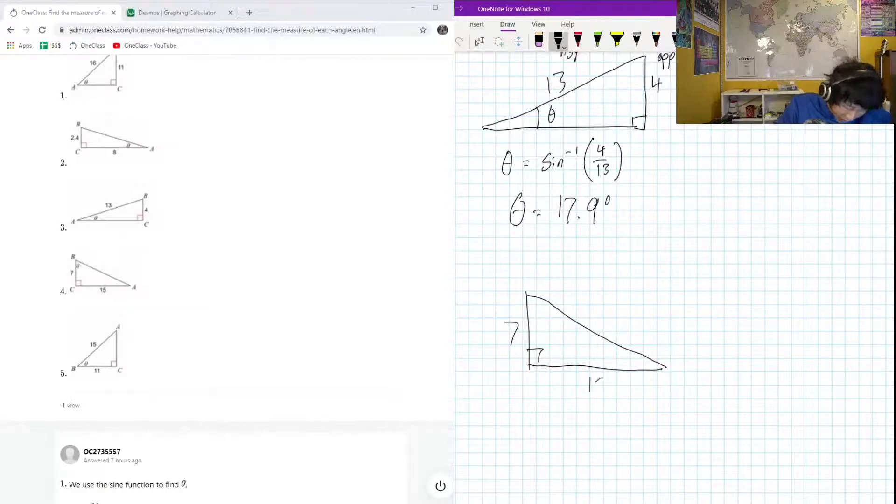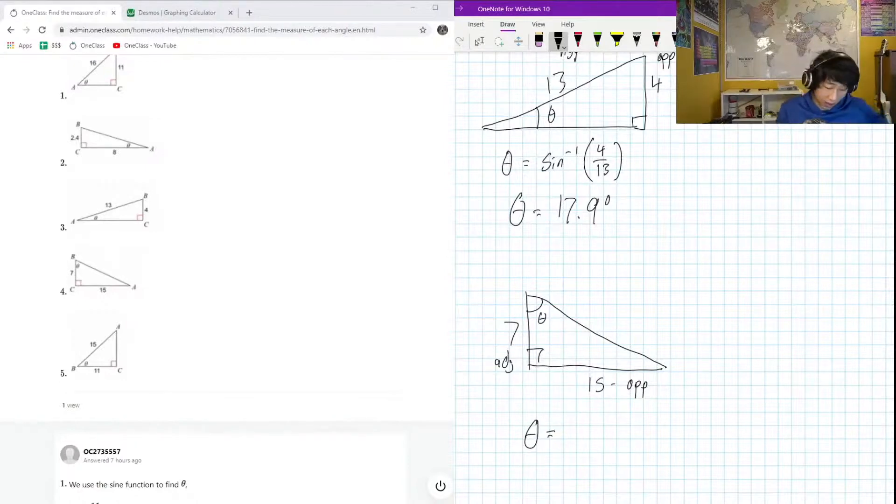This is going to be the opposite and here will be the adjacent. So to find the angle we know that we're going to need inverse tan because tan is related to opposite and adjacent.